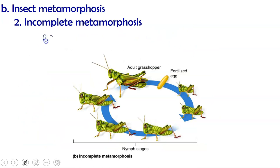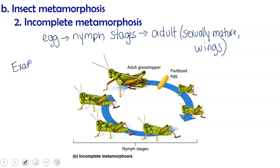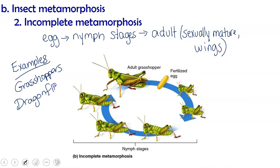Incomplete metamorphosis starts as an egg and hatches into a nymph, which may look like a small adult — as in a grasshopper — or may look completely different, as in a dragonfly or cicada. The nymph goes through several molts, growing larger, and after its last molt becomes an adult. The adult is sexually mature and only at this stage does the insect have wings. Examples include grasshoppers, crickets, dragonflies, mosquitoes, cicadas, and cockroaches.